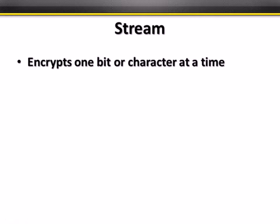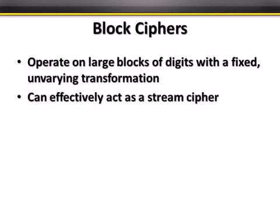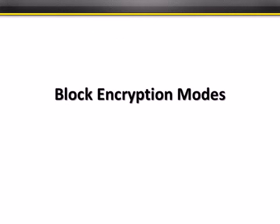A stream cipher encrypts one bit or a single character at a time — a small single unit. A block cipher works on larger fixed-size blocks of digits with an unvarying transformation applied to one block in succession after another. Some block ciphers can effectively act as stream ciphers, as we'll see shortly.